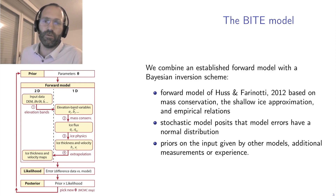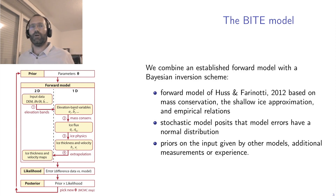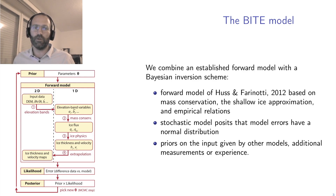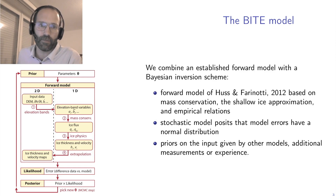The model combines an established forward model with a Bayesian inversion scheme. The forward model is one by Huston Farinotti, based on mass conservation, ice physics, and some empirical relations. The basic idea is that it's relatively easy to know how much snowfall there is at the top and how much melt there is at the bottom — you can get this from measurements or from climate models. Once you know this, you know the mass turnover in the system, and so you know the flux of ice. To accommodate a certain flux of ice, you need a certain thickness — the thicker the glacier, the more flux it can create. This allows us to estimate ice thickness.